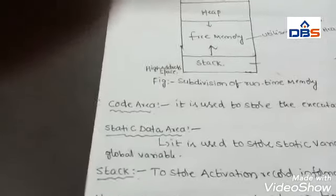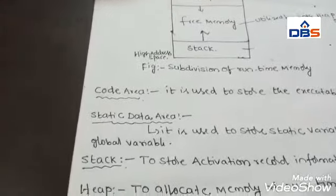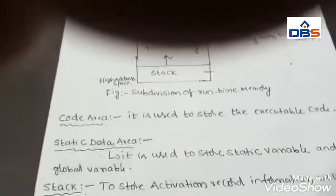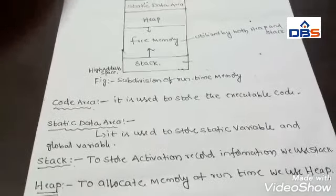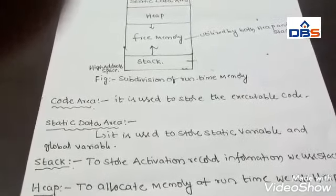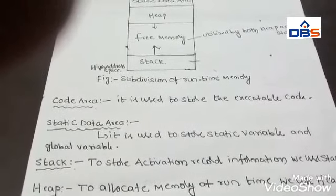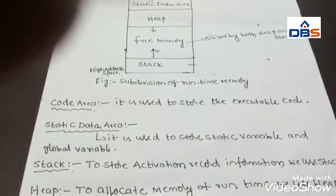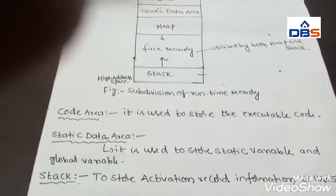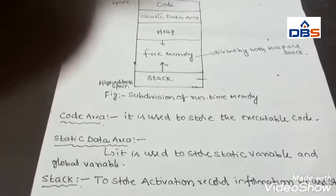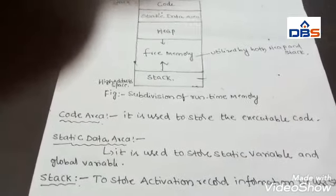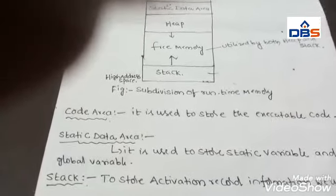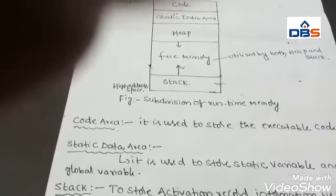The second area is the static data area. The main purpose of the static data area is it is used to store static variables as well as global variables. A global variable is useful throughout the program, whereas a static variable means the value of the variable is persistent.